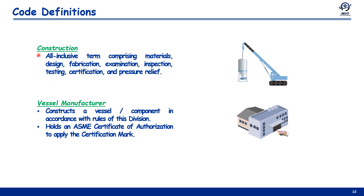Construction and vessel manufacturer are familiar terms, but their specific definitions come from the code itself. Construction is an all-inclusive term comprising materials, design, fabrication, examination, inspection, testing, certification, and pressure relief requirements. The vessel manufacturer's role is to construct vessel components in accordance with the rules of the applicable division. He also holds an ASME certificate of authorization to apply the certification mark — for Division 1 it is U or U1, for Division 2 it is U or U2, and for Division 3 it is U3.